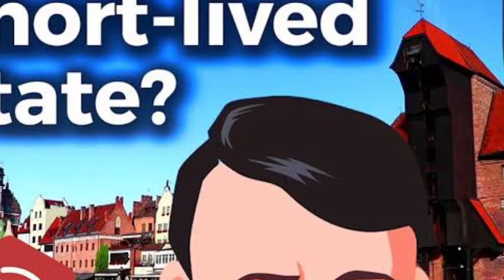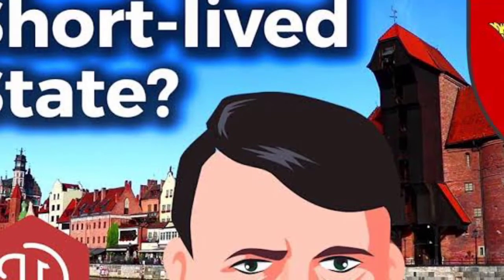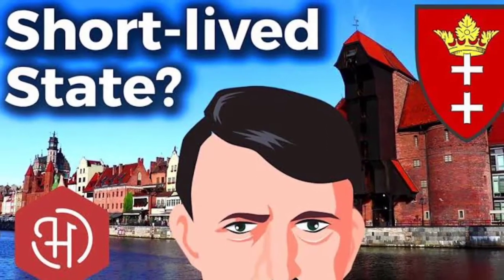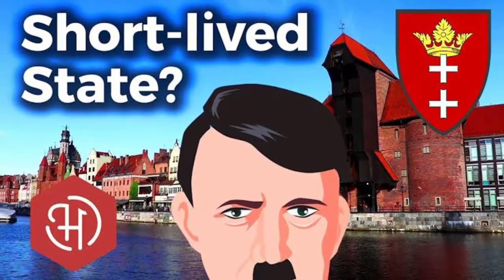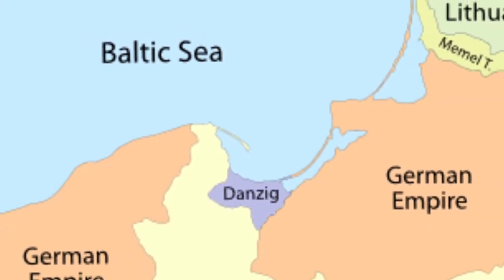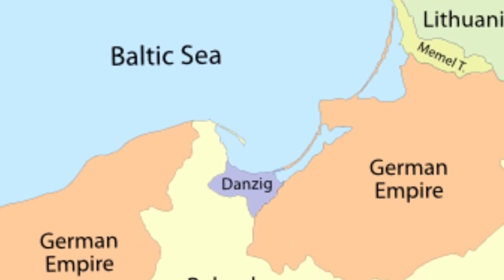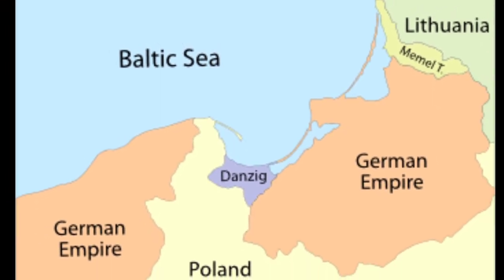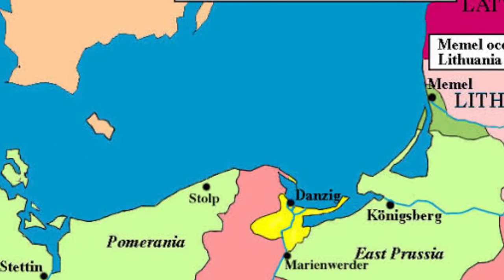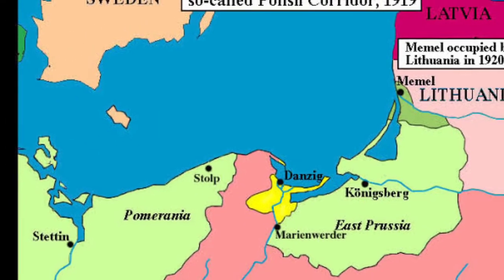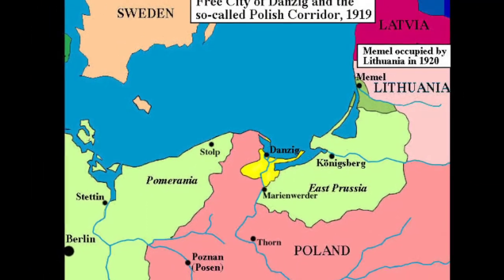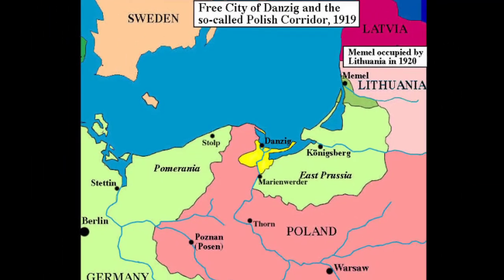In 1945, the city officially became part of Poland in accordance with the Potsdam Agreement. In the period immediately after the war, many surviving Germans were expelled to West or East Germany, while members of the pre-war Polish ethnic minority started returning and new Polish settlers began to come. Gdańsk suffered severe underpopulation from these events and did not recover until the late 1950s.